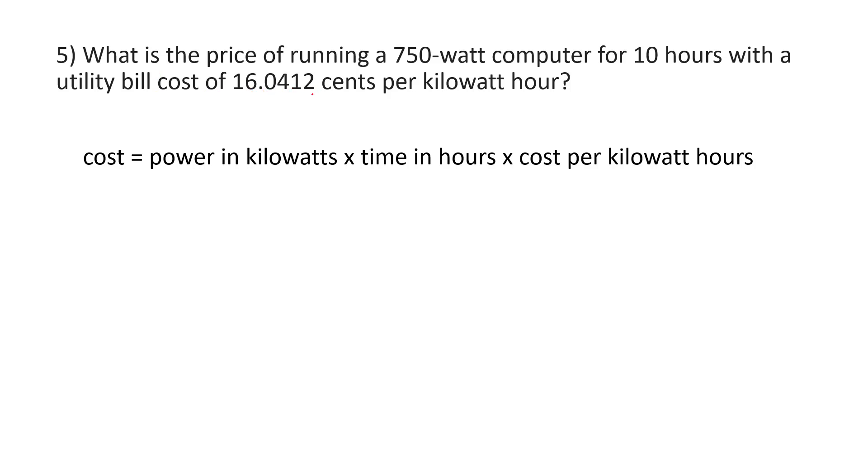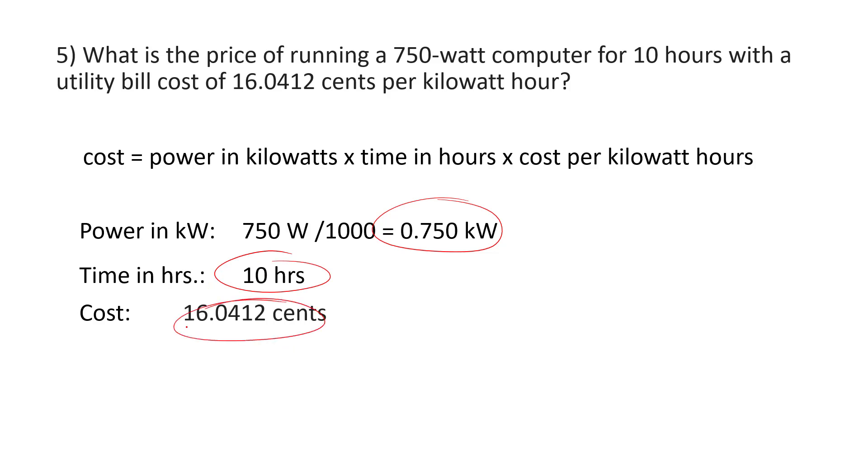What's the price of running this 750-watt computer for 10 hours with the utility bill costing 16.0412 cents? If you go ahead and work this, pause the video if you're watching, and then check your answer. We're given power in watts, so we have to convert to kilowatts by dividing by 1,000. We're given hours, so we don't have to convert. We're given cost in cents, so we can just plug those values in, multiply them together, and you're going to get a cost total of 120 cents for this example.